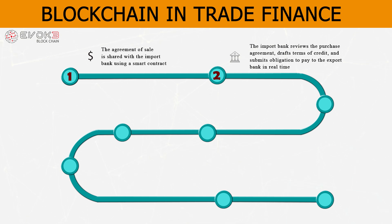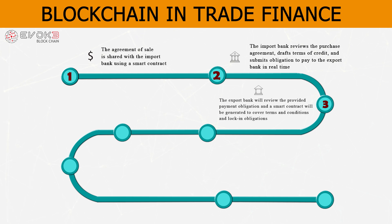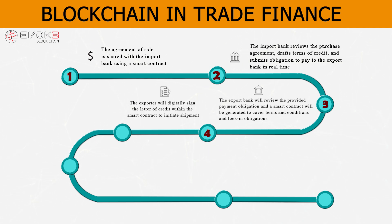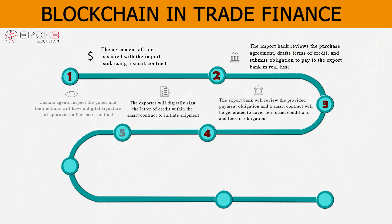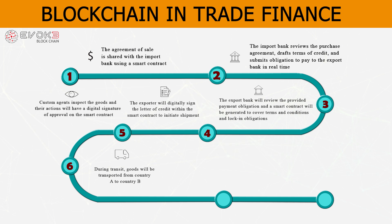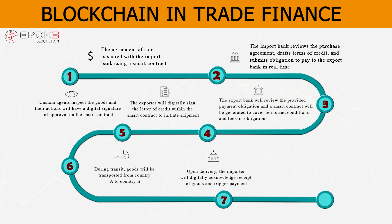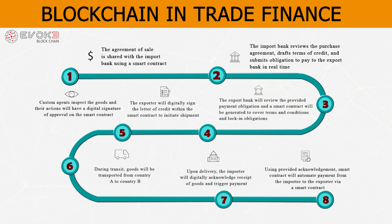The export bank reviews the provided payment obligation, and a smart contract is generated on the blockchain to cover terms and conditions and lock in obligations. After receiving the obligation, the exporter digitally signs blockchain documents within the smart contract to initiate shipment. A customs agent inspects the goods and adds a digital signature of approval on the smart contract. During transit, goods are transported from country A to country B. Upon delivery, the importer digitally acknowledges receipt of goods and triggers payment. The smart contract then automates payment from the importer to the exporter.